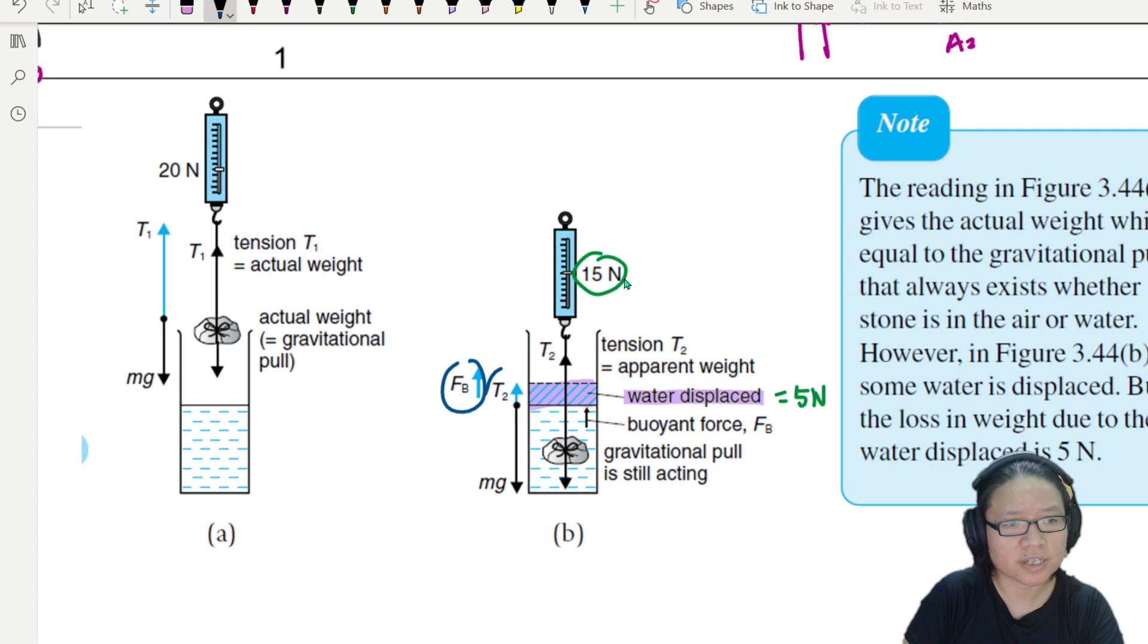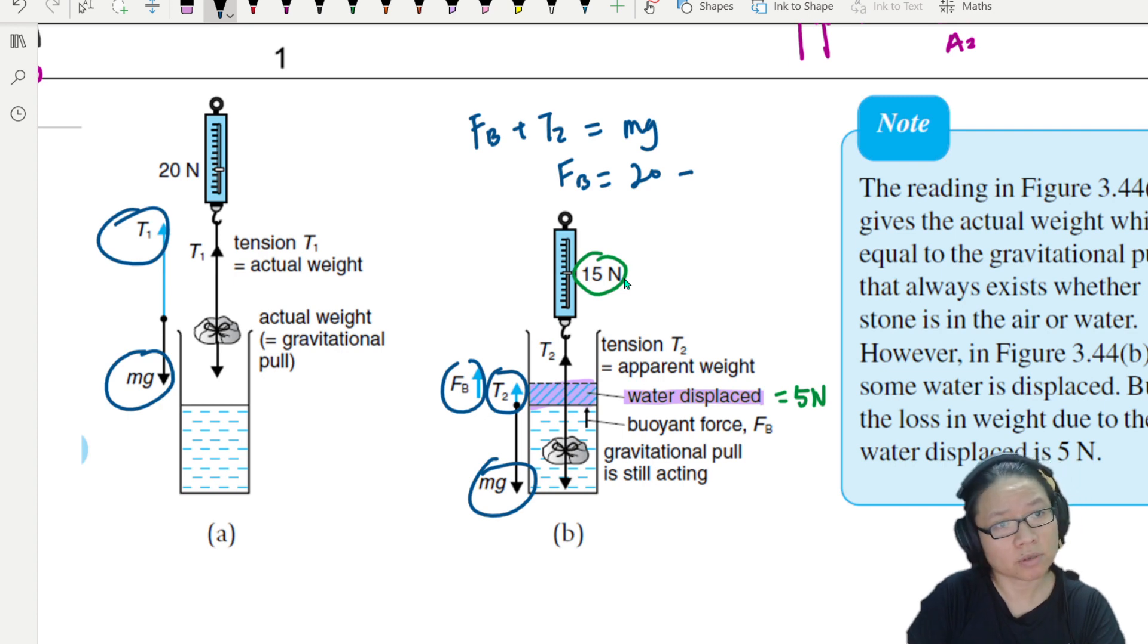will be equal to the downforce, mg. So, buoyancy will be equal to mg, which is 20 newton. mg was 20 newton. Minus the water displaced. Minus T2. T2. So, 20 minus 15 is 5. The water helps support 5. Okay, so this is straightforward enough idea.